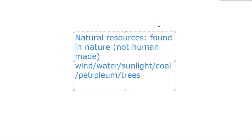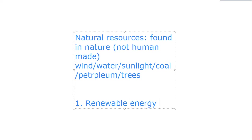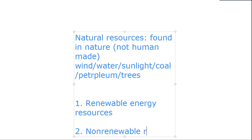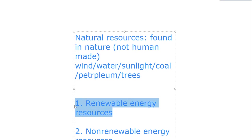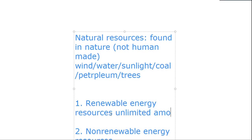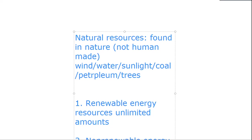Natural resources can be divided into two types or two categories. The first is renewable resources, and the second is non-renewable energy resources. You have to know that renewable energy sources are called renewable because we can use them again and again, and they can be replaced quickly. We have unlimited amounts of them. Examples include solar energy.